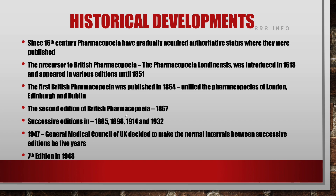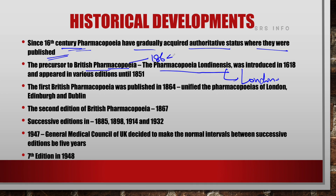The main remarkable historical developments in the field of Pharmacopoeia started in the 16th century. Since the 16th century, Pharmacopoeias have gradually acquired authority status where they were published. The precursor of British Pharmacopoeia was Pharmacopoeia Londonensis, which was published in London — this is an example of a City Pharmacopoeia. In the earlier time, this Pharmacopoeia Londonensis was the precursor of the British Pharmacopoeia published in 1864.